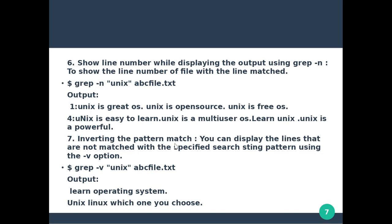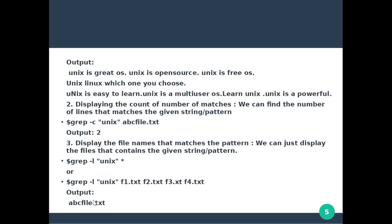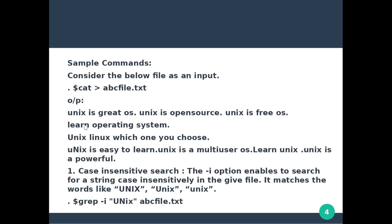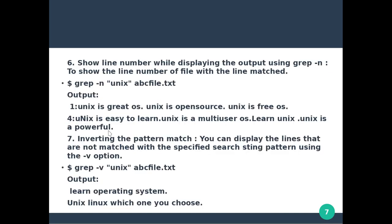Minus v is the option that displays lines that do not match a particular pattern. So with grep minus v unix abc file dot txt, the lines in the file that do not contain unix are printed. The second and third lines — those not containing unix — are printed, resulting in two lines printed.